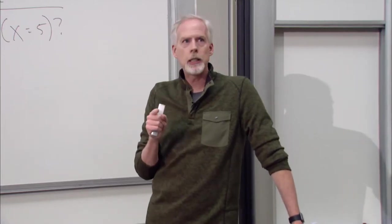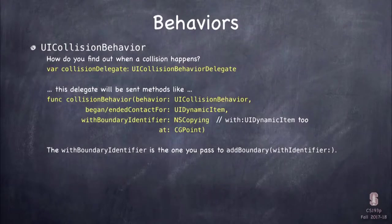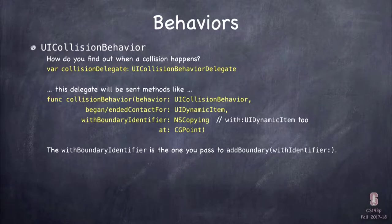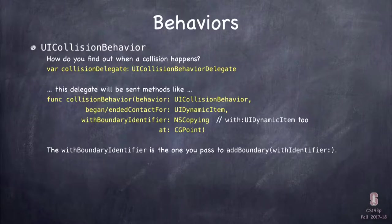Collision boundaries also have a delegate that tells you when collisions happen. You get methods like collisionBehavior(_:beganContactFor:withBoundaryIdentifier:at:). Note the boundary identifiers are of type NSCopying — that means they're either an NSNumber or NSString, so you can use as to convert them to Swift String, Double, or Int.